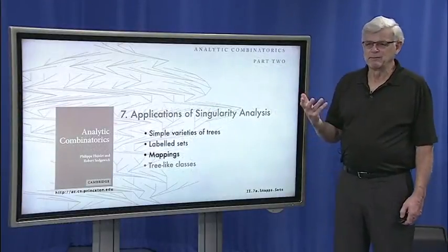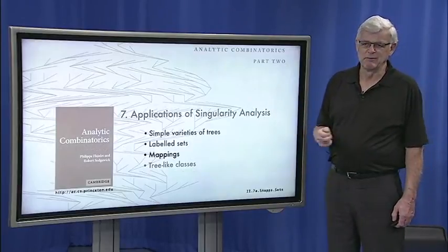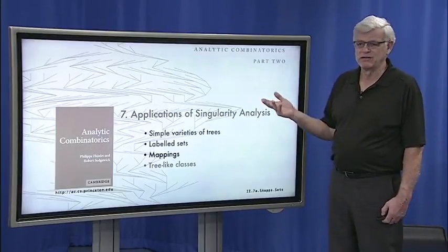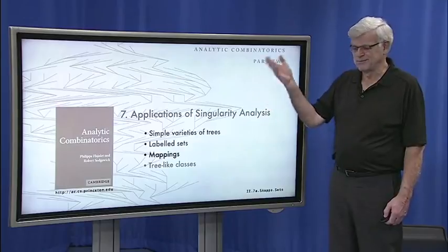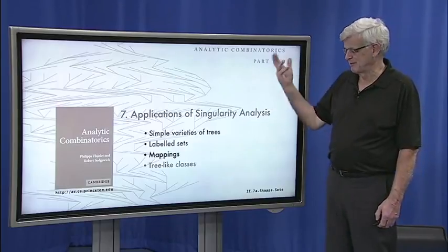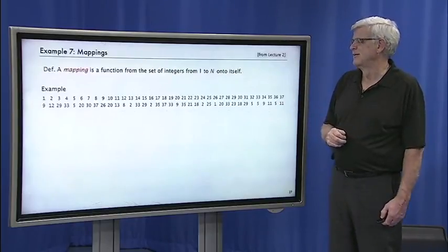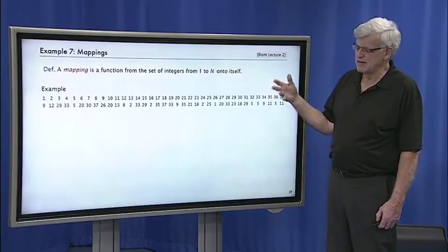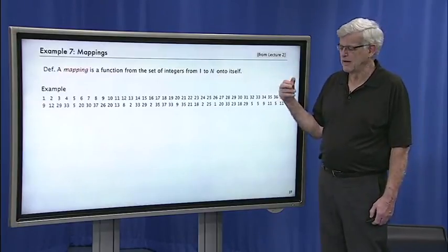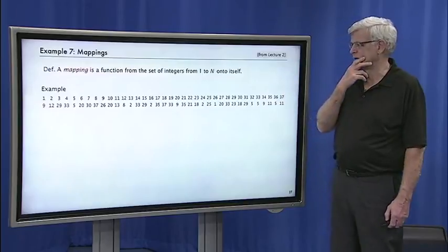Now we're going to talk about the analysis of random mappings. This is something we've been promising for a while and actually it uses a lot of the things, pretty much everything we've talked about so far for the analysis. And it's a very elegant and compelling application of analytic combinatorics.